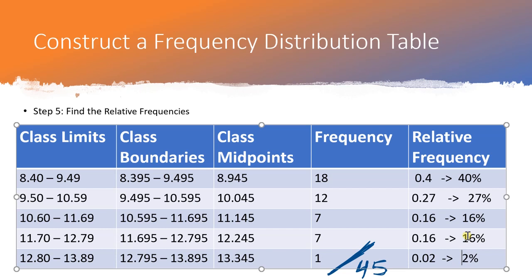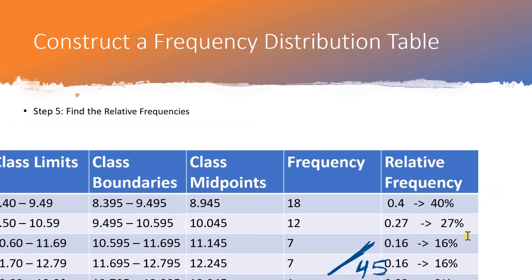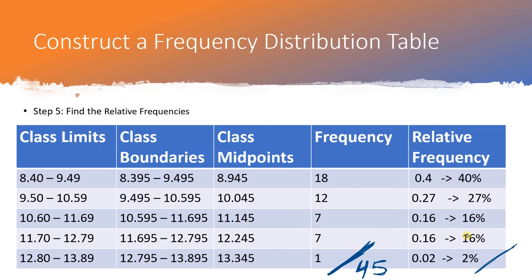When you add up your relative frequencies, you should get 100% (or 1.0 in decimal form). Adding our percentages: 40 + 27 + 16 + 16 + 2 = 101, which is a rounding error. That's fine — if it's off by more than one percentage point, double-check your calculations, but one percentage point off is likely just rounding error. It needs to be approximately equal to 100%.